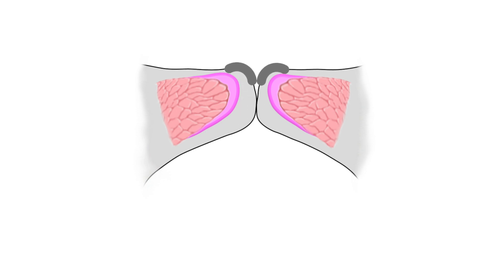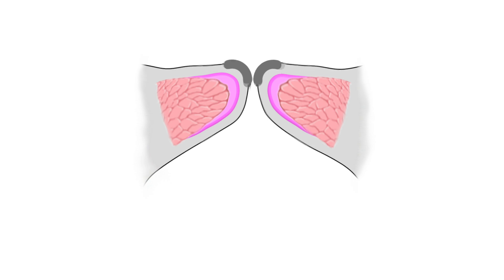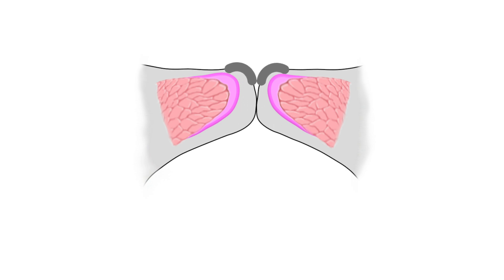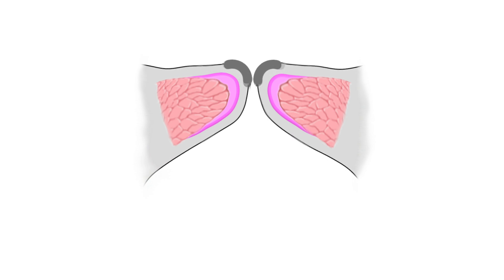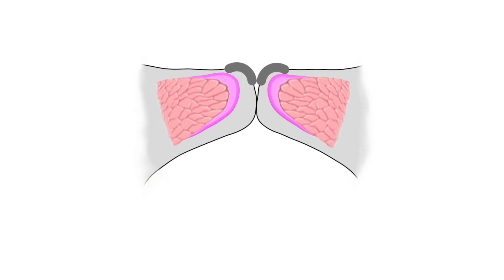When small, the raspy voice mainly occurs in the higher pitches, where the vocal fold vibration is most narrow. As the nodules become larger, it starts to affect the lower pitch ranges.